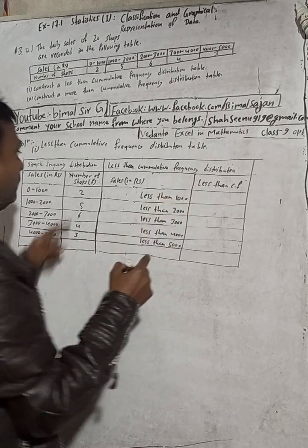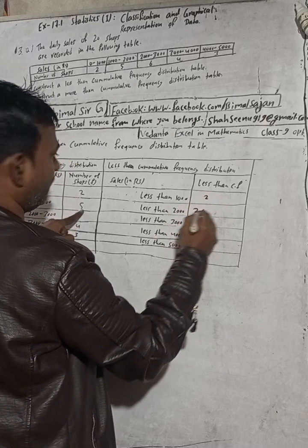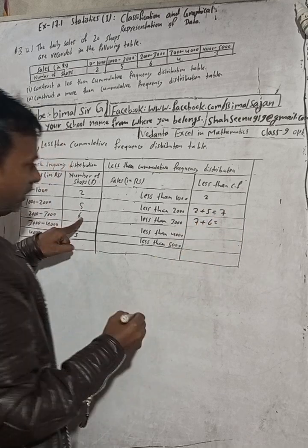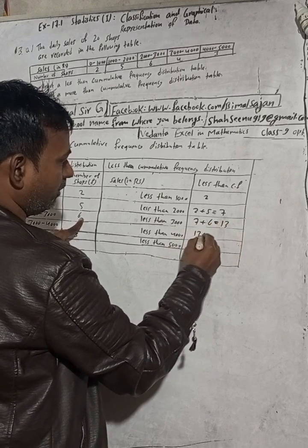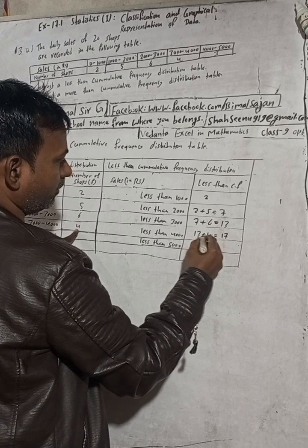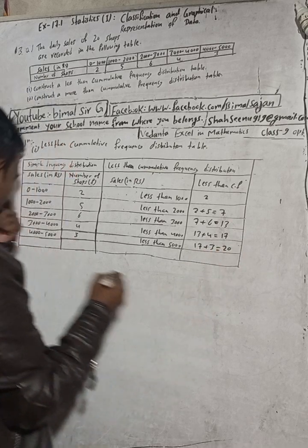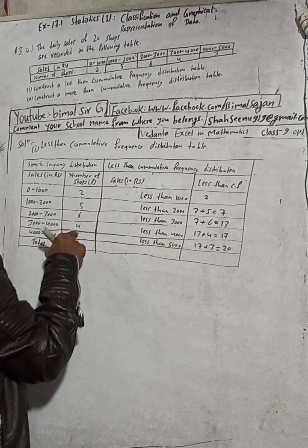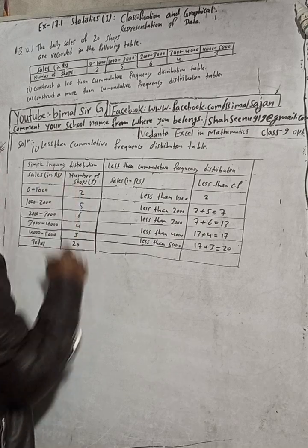Now we will start from the top. The frequency for less than 1000 is 2. Then 2 plus 5 equals 7 — write 7. Then 7 plus 6 equals 13 — write 13. Then 13 plus 4 equals 17 — write 17. And finally 17 plus 3 equals 20. So the total is 20. The cumulative frequencies are: 2, 7, 13, 17, 20.